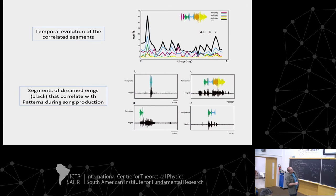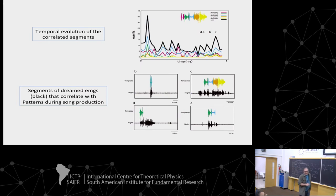There is some time in the middle of the night when the bird doesn't have much activity, and then before waking up there is another peak. With different colors I'm displaying instances where you have correlation with different templates. So whenever you have a blue line, you have correlation with that particular template. You can see that in this hour the bird practices one pattern a lot, and in another hour it practices a different pattern.